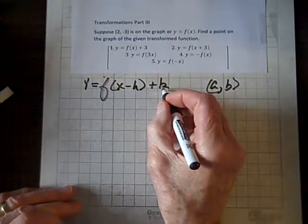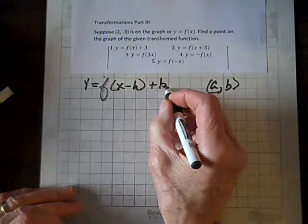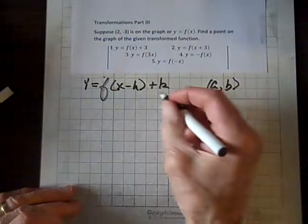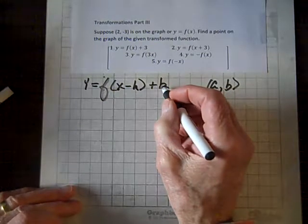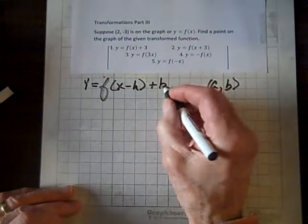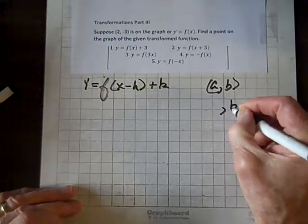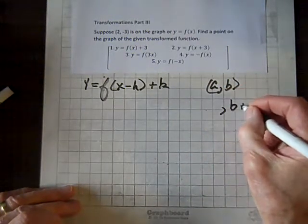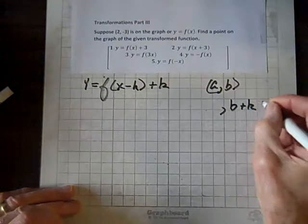Now, what does this impact, this k? Does it impact the a or the b? Well, it impacts the... it's a vertical transformation, so we add k to b to get the new y coordinate.